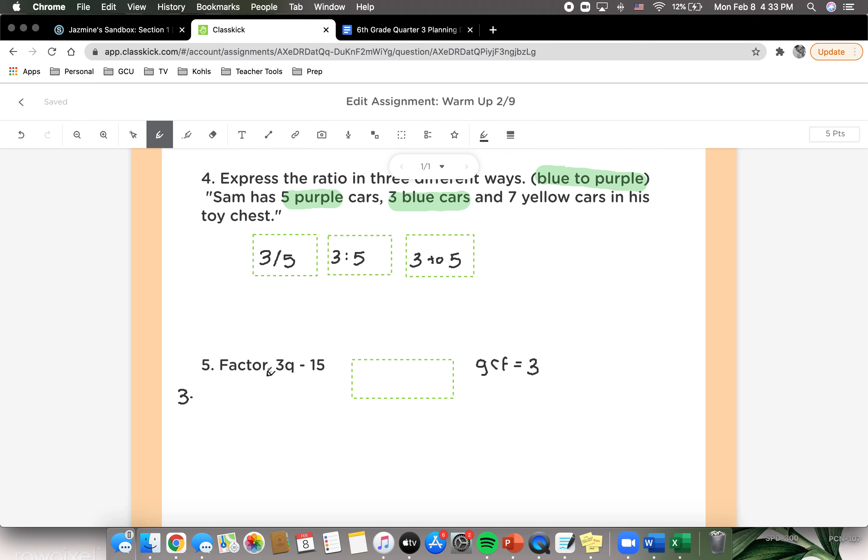Now with that information, we know 3 times what number gives us 3q, which 3 times q gives us 3q, and our middle operation was subtracting, so we got to make sure it's subtracting. Our greatest common factor was 3, so 3 times what number gives us 15, and that is going to be 5. 3 times 5 gives us 15.